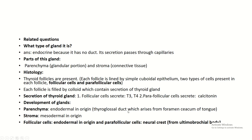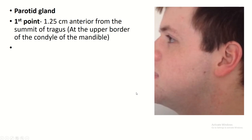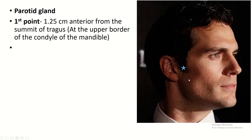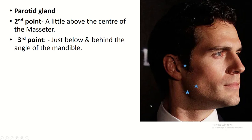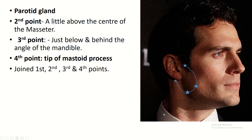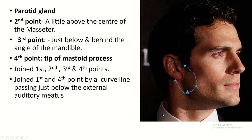Surface anatomy of the parotid gland: first point, 1.25 cm from the summit of the tragus, over the masseter muscle; second point, a little above the center of the masseter muscle; third point, below and behind the angle of the mandible; fourth point, the tip of the mastoid process. Join the first, second, third, and fourth points, then join the first point with the fourth point by a curved line below the ear.